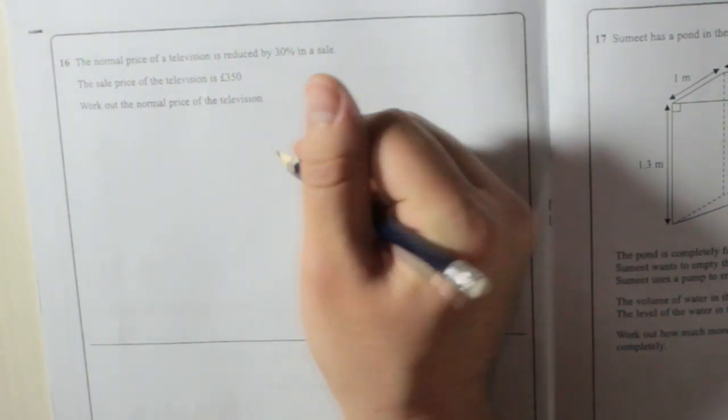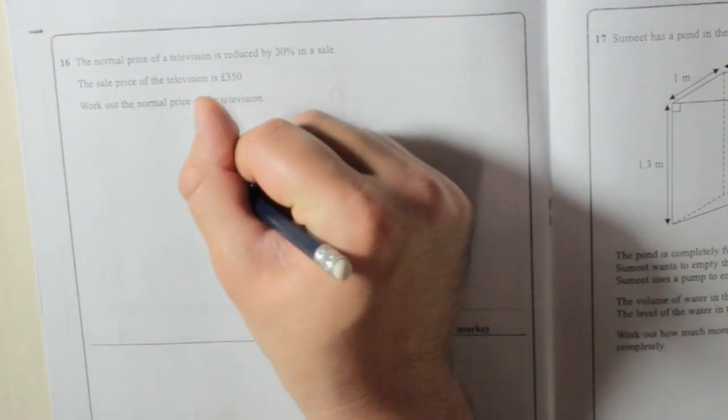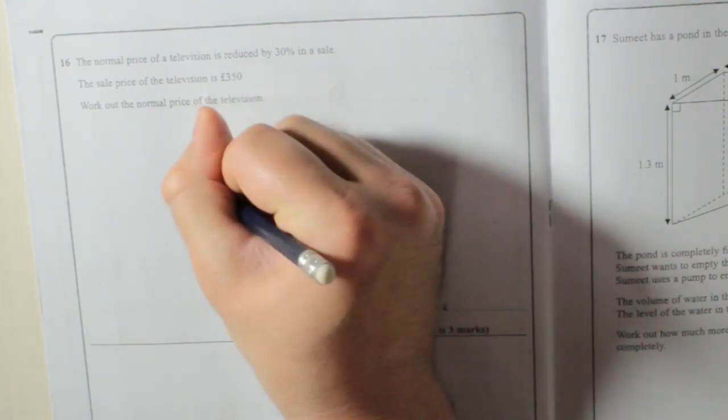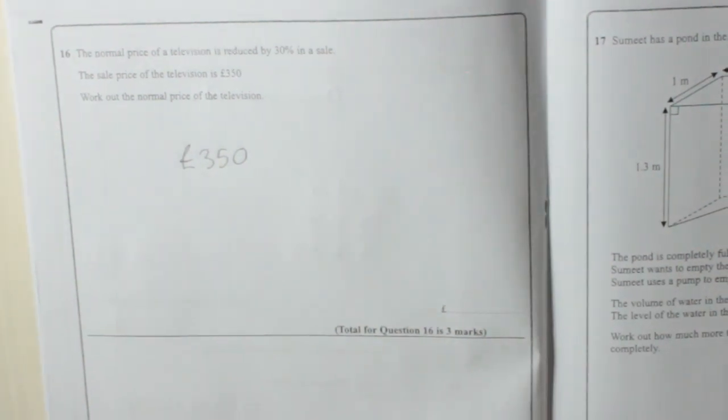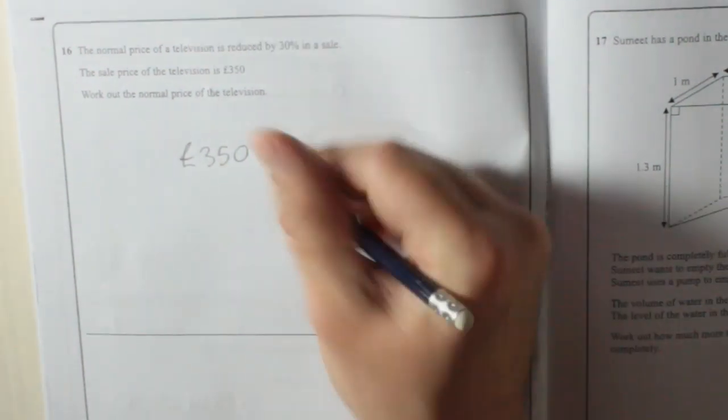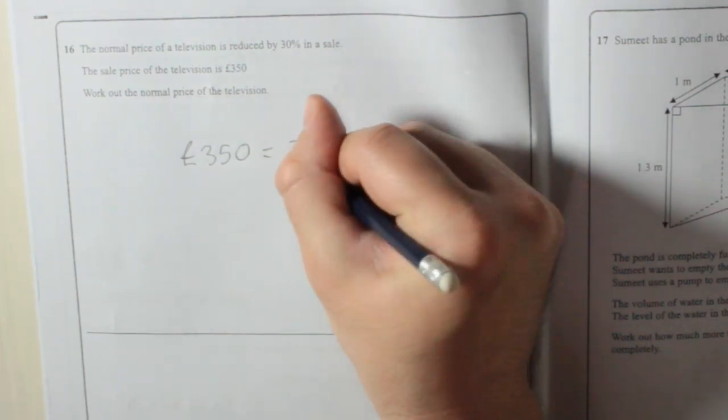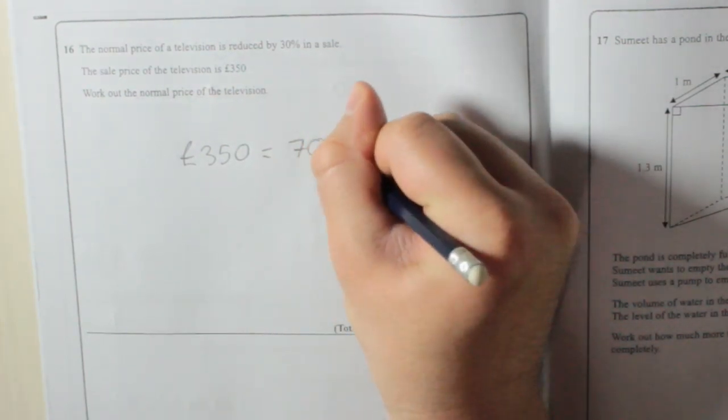What we need to remember, or realise, is that £350 is a 30% reduction. Well, the original is going to be 100%. What percentage would this be? It would be 70%.